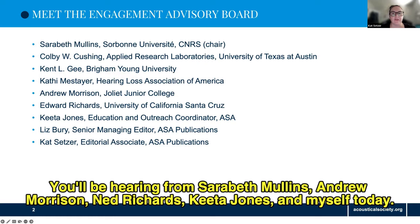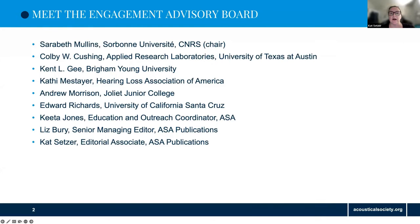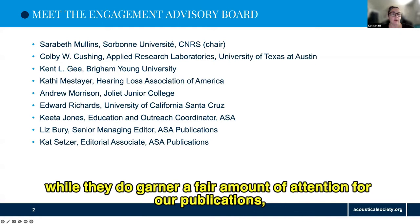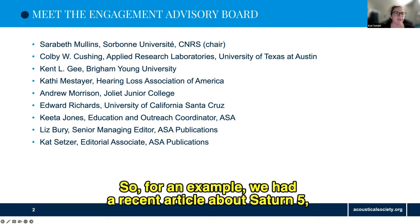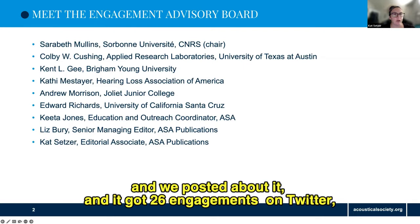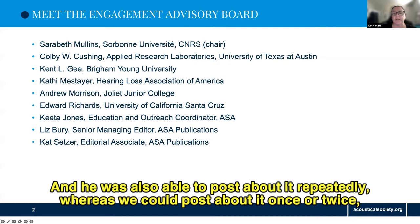The EAB was created to help develop content to promote research from ASA Publications through our own social media accounts. But what we realized is that while they do garner a fair amount of attention for our publications, those publications actually get much more attention when promoted by the authors themselves. For example, we had a recent article about Saturn V, posted about it and got 26 engagements on Twitter. When the author posted about it, he got 36 engagements, and he was also able to post about it repeatedly, whereas we could post about it once or twice.